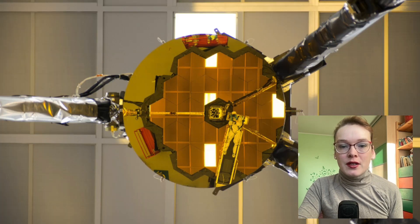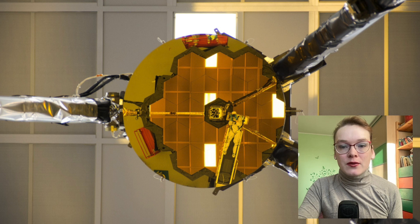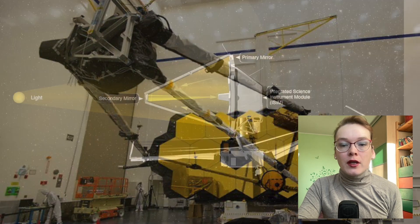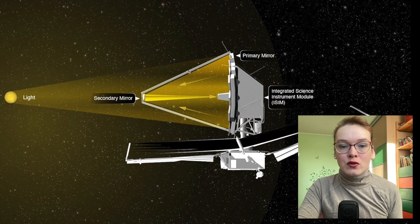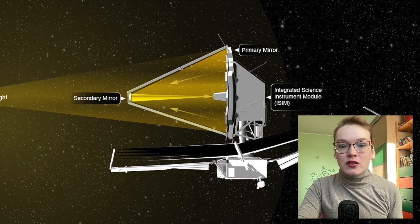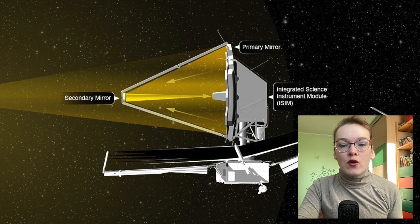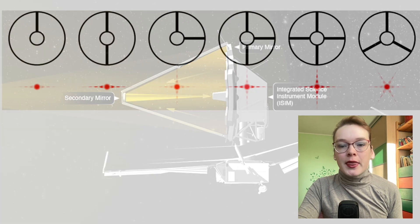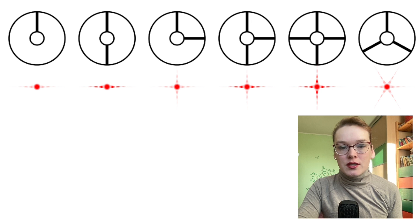And this secondary mirror is located above the main James Webb mirror on three supports. When the light from the star is sent to the main mirror, part of it is forced to go around obstacles in the form of supports. This diffraction eventually shifts the light in the resulting image, forming lines corresponding to the position of the support rods. And in the case of three supports, there will be six such diffraction spikes.